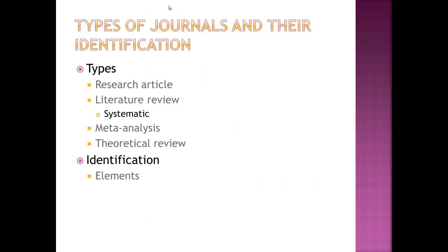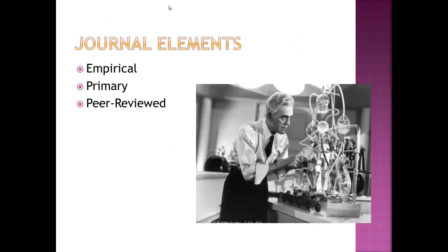Journals generate their revenue through very high subscription fees. Now that we have a basic understanding of the difference between magazines and journals, let's look more closely at journals. There are research articles, literature review articles, meta-analyses, and theoretical review articles. To identify these different types, you need to understand the basic elements of journal articles — almost like chemical elements that you mix together to get a compound.